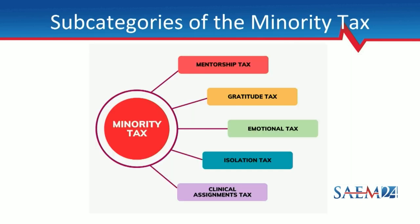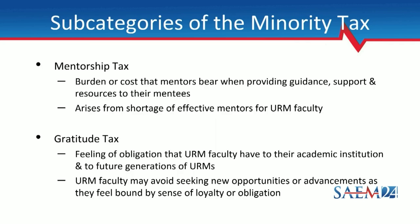There are five main subcategories of the minority tax: the mentorship tax, gratitude tax, emotional tax, isolation tax, and the clinical assignments tax. The mentorship tax is the burden or cost that mentors themselves bear when providing guidance, support, and resources to their mentees. Oftentimes one faculty member will have many non-URM and URIM mentees and feel overstretched or overcommitted. They themselves do not get sufficient or effective mentorship, arising from a shortage of effective mentors for URIM faculty.